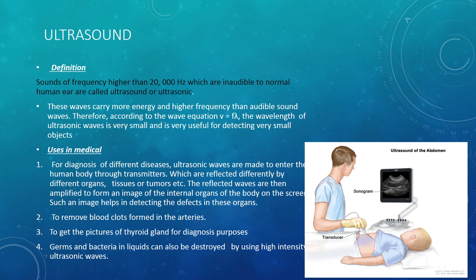The wave relation is V = Fλ, where F is the frequency and λ is the wavelength. From this relation, the higher the frequency, the higher the speed and the less the wavelength, because frequency and wavelength have an inverse relation. So ultrasound's wavelength is very small, which is why it is used for detecting very small objects.